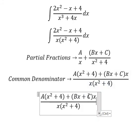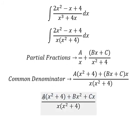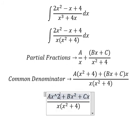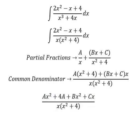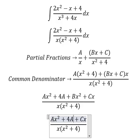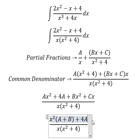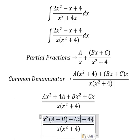Now we need to expand this one and this one. Now we need to arrange based on the terms of x. For x squared we have A and B. For x we have Cx. For the constant we have 4A.